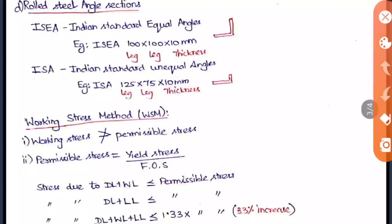For rolled steel angle sections, there are two types: equal angle (ISEA) and unequal angle (ISUA). For example, ISEA 100 × 100 × 10 mm means the legs are 100 mm in X and Y axes and the thickness is 10 mm. Unlike other sections represented by depth and weight, angle sections are represented by the dimensions of the legs and thickness.